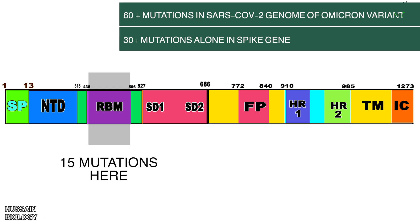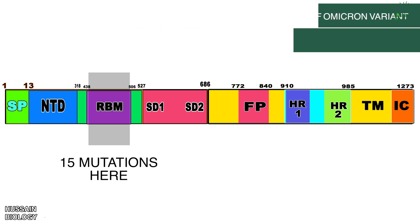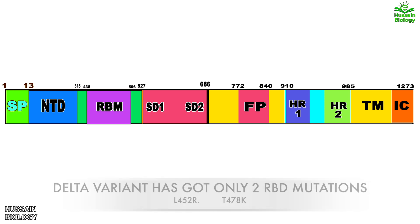It must be noted that the Delta variant has only two receptor binding domain mutations: the first is the L452R mutation, and the second is the T478K mutation.